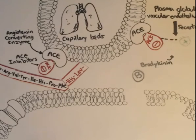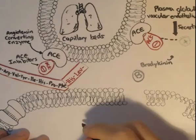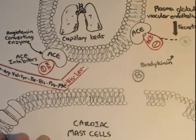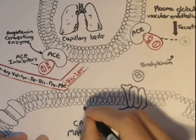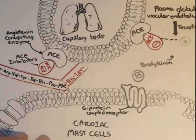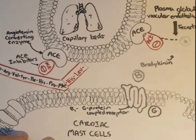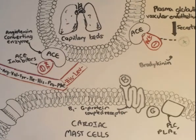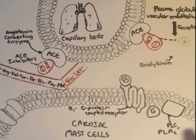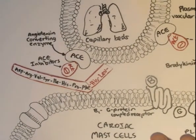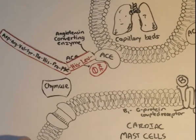So bradykinin is free to go around. Bradykinin actually has another function — not only as a vasodilator, but it also reacts with mast cells, particularly cardiac mast cells, the heart mast cells, through a G-protein process. This is a beta-1 G-protein coupled receptor, and here is the effector: phospholipase C and PLA2. Bradykinin binds to the G-protein receptor, activates the G-protein inside, which activates phospholipase C. Basically, what happens is that the mast cells create an enzyme called chymase, which gets secreted out into the plasma and the blood vessels.